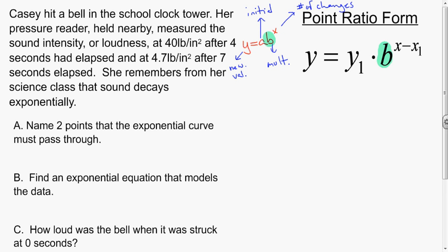So how are they different? Well if you notice here where we have the initial value, we actually have this thing called y₁, and this is what makes point ratio form a little different.